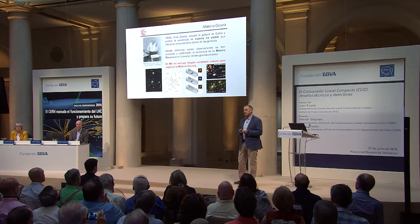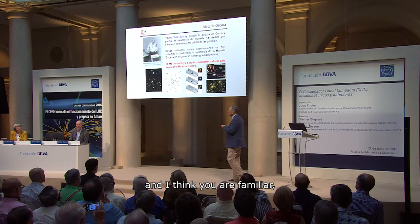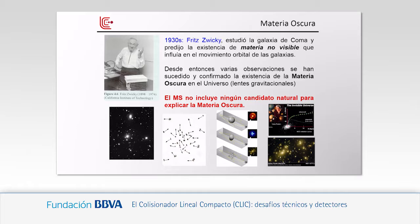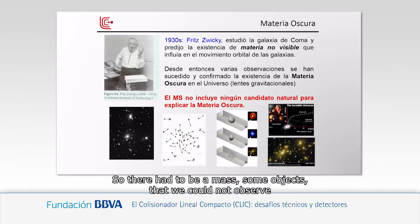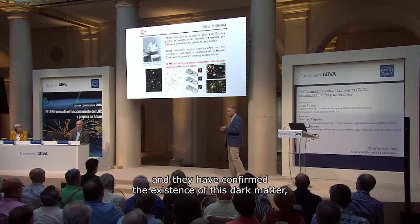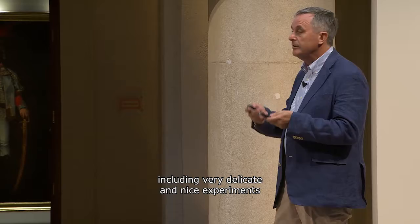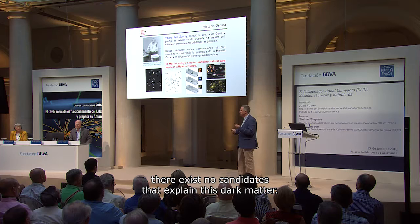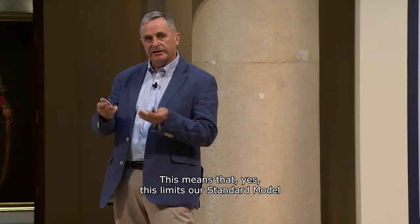Another aspect that limits the standard model, and which you are surely familiar with, is the existence of dark matter. In the 1930s, we observed that the orbital velocities of galaxies did not correspond to the visible mass of stars and galaxies. There had to be objects we could not observe that were responsible for that motion. Those experiments have been confirmed using very delicate techniques, including gravitational lensing. In the current standard model there is no candidate to explain dark matter.